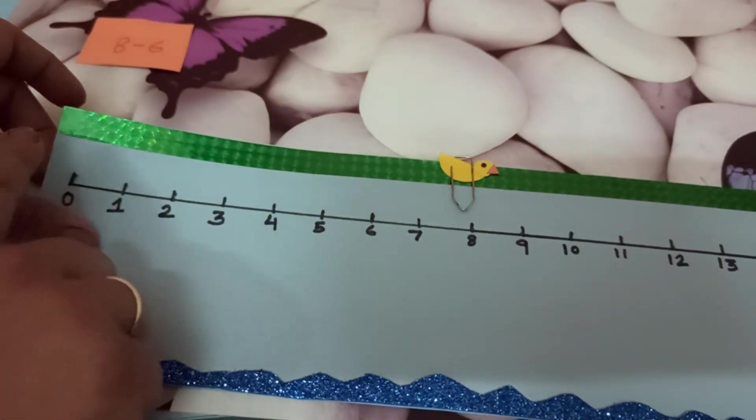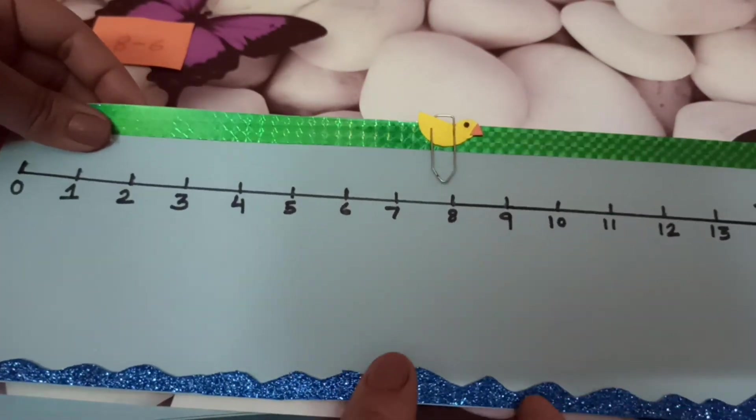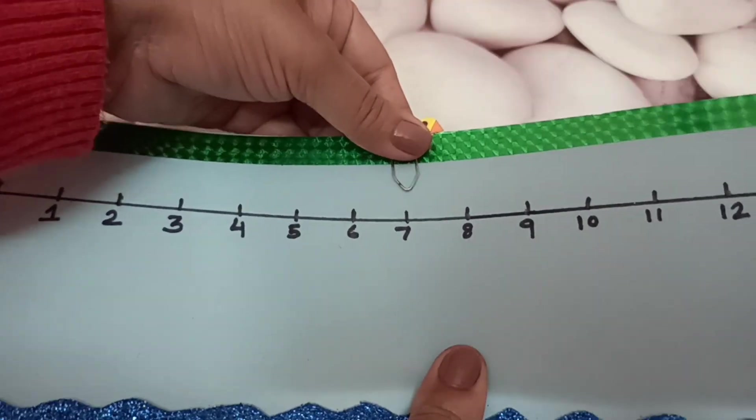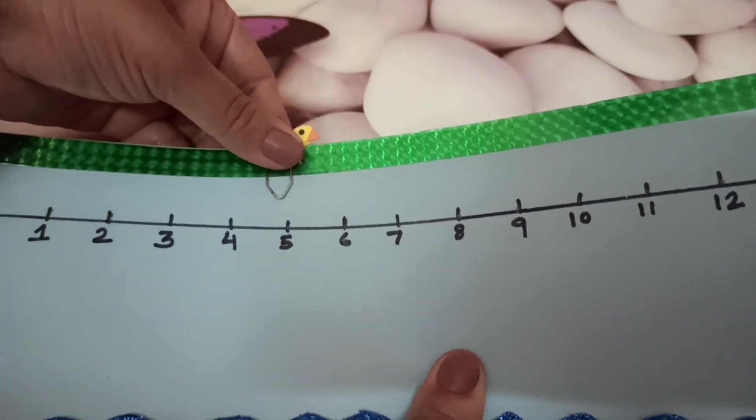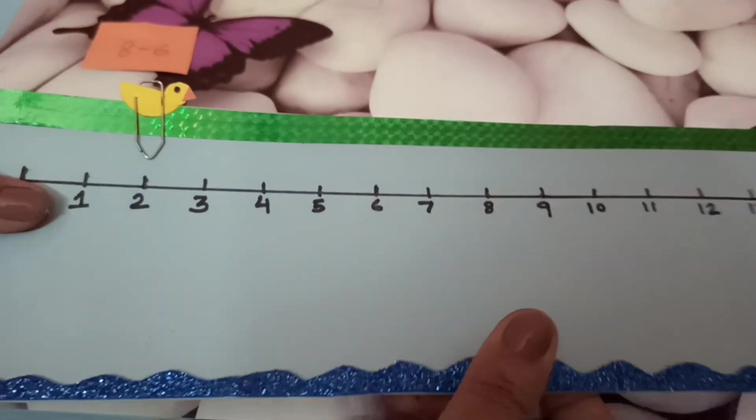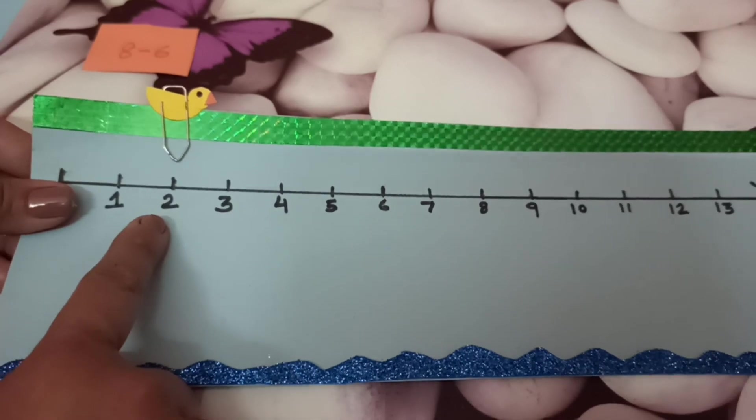What we have to do, we will slide back the duck. So here you can see 1, 2, 3, 4, 5, 6. Now the duck has stopped on number 2 and this is our answer.